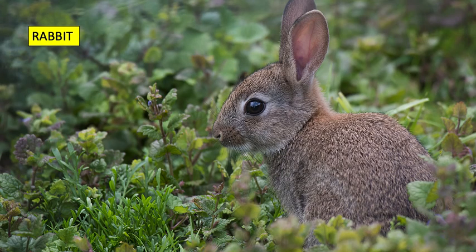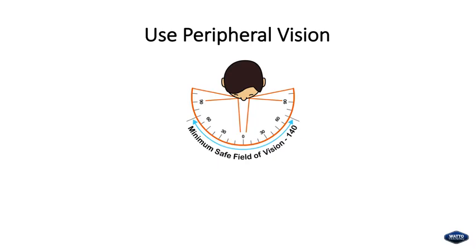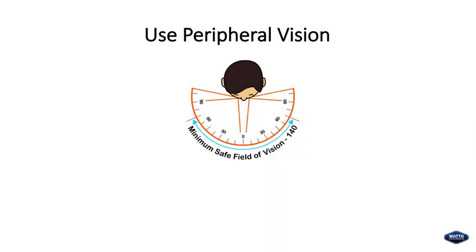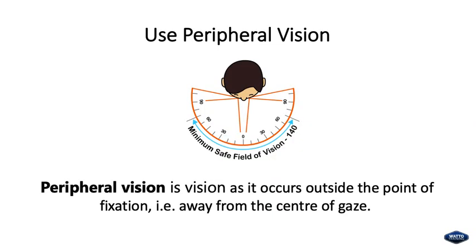Remember the rabbit. If you look at where the rabbit's eyes are positioned, they have a greater peripheral vision than humans. Use your peripheral vision so you can see what's out to the sides. Peripheral vision is vision as it occurs outside the point of fixation — that is, away from the center of gaze.